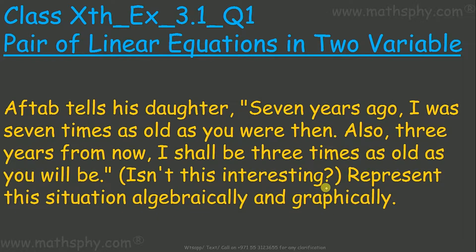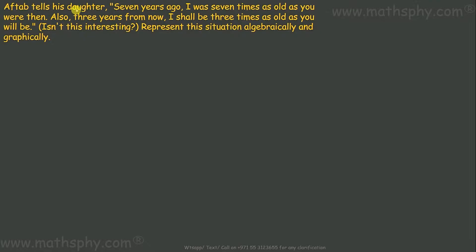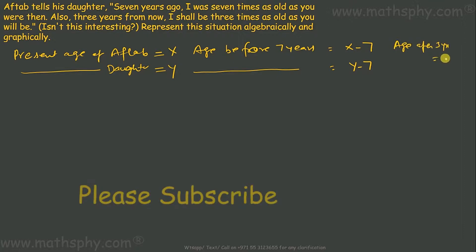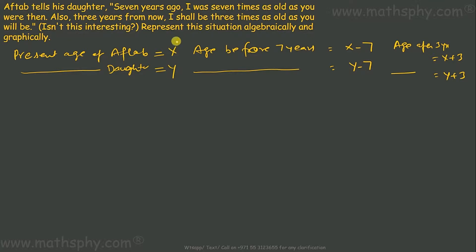Let's suppose Aaktaab and his daughter's present ages are X and Y respectively. Present age of Aaktaab is X, present age of daughter is Y. So age before seven years would be X minus seven for Aaktaab and Y minus seven for the daughter. Age after three years would be X plus three for Aaktaab and Y plus three for the daughter.